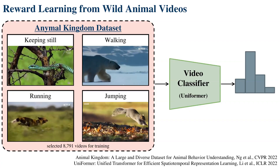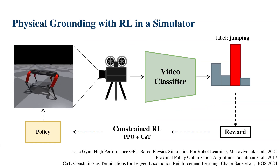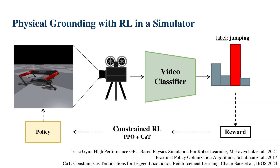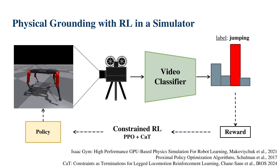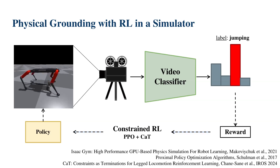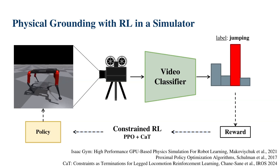In the second stage, we ground these motion concepts on a legged robot in a physics simulator. A third-person camera captures the robot's movements, and the classification score is used as a reward for training a multi-skill policy with reinforcement learning.